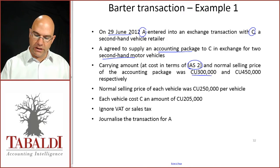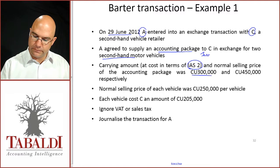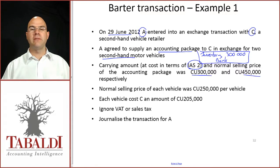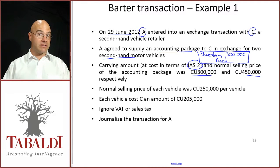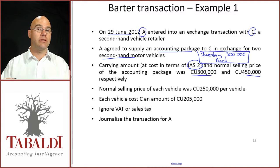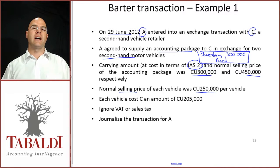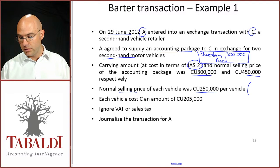We did the original journal. When we recorded this, we would have gone debit inventory — when we purchased it — credit bank, $300,000. The normal selling price would have been $450,000, but we're not selling this for cash; we're exchanging it for motor vehicles. The normal selling price of each vehicle was $250,000 per vehicle, which we can assume equals fair value.